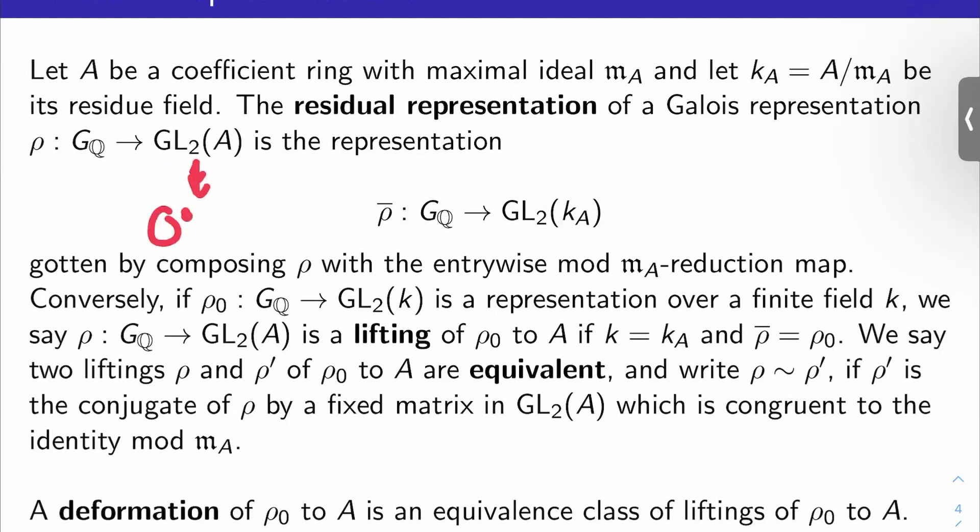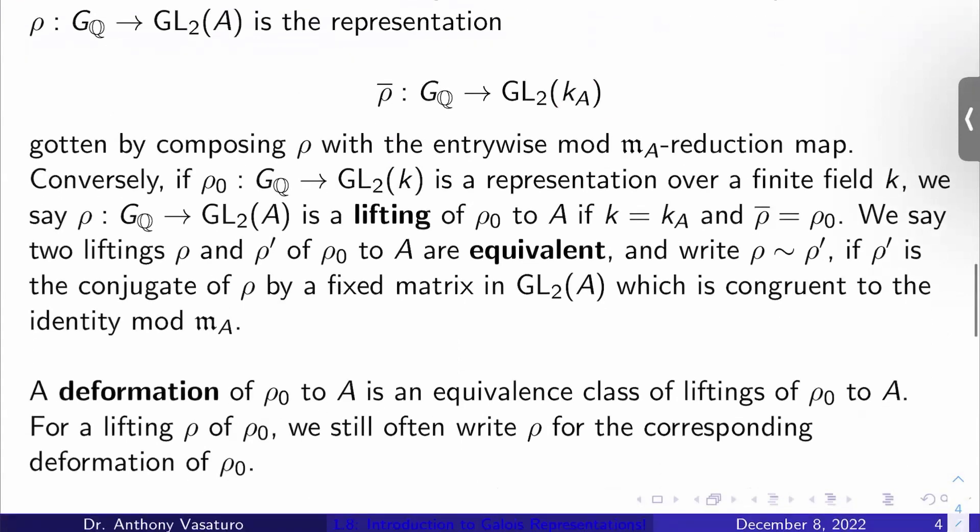So there's a map from GL_2(A) to GL_2(k_A). You just reduce all the entries in A mod m_A. That gives you a residual, what we call a residual representation.